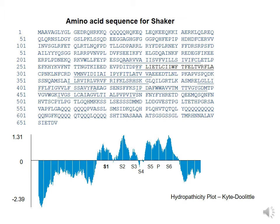In this figure you can see an example of a potassium channel named Shaker, because it was cloned from Drosophila — from fruit flies — and these fruit flies, upon exposure to ether, start to shake very violently. Some investigators were able to clone the gene that confirmed this phenotype in these fruit flies, and they found out that the gene encoded a potassium channel, then named Shaker.